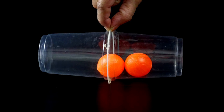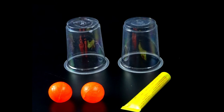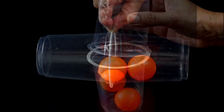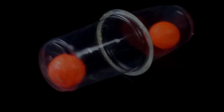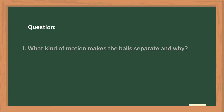Let's see one more activity to explain centrifugal force. Students can directly perform this activity under the teacher's guidance. Let's make an assembly using two transparent plastic glasses, two plastic balls, and cello tape. We can ask students: how can we separate these balls without touching them and without destroying the assembly? After performing the activity, ask students: what kind of motion separates the balls and why?